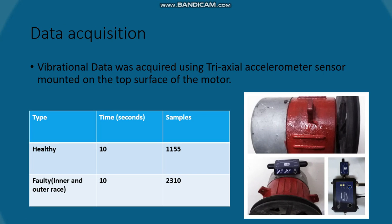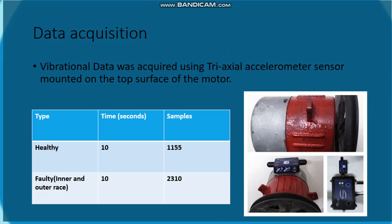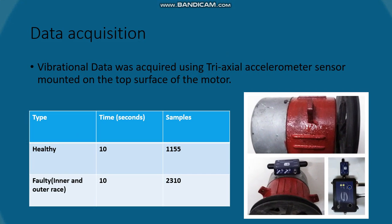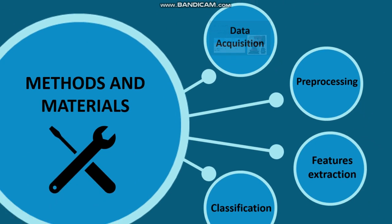As you can see in the figure, the rotating machinery used for this research is a quarter-horsepower motor which runs at a speed of 600 rotations per minute. The vibration data was acquired using the triaxial accelerometer sensor mounted on the top surface of the motor. The dataset contains 1155 samples for healthy bearing and 2310 samples for faulty bearing, comprising inner race and outer race faults.